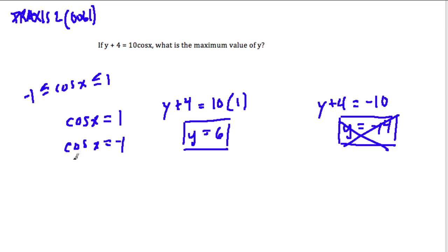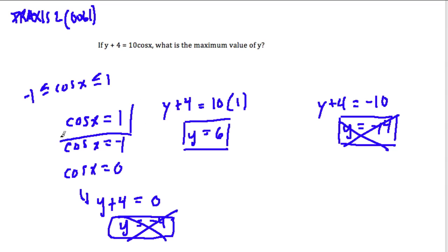Of course, you can always test a third extreme. What about when cosine of x equals 0? Then y plus 4 is going to equal 0, so y equals negative 4. And that's too small as well. So this is going to happen when our cosine value is our largest value.